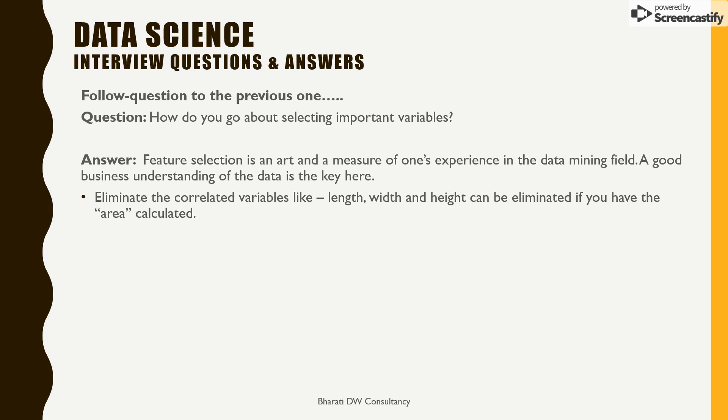Now, the first step is eliminate correlated variables. That means, for example, length, width, and height given along with the area as a field. Area can be calculated as a product of these three fields. So you can eliminate length, width, and height and just use area.